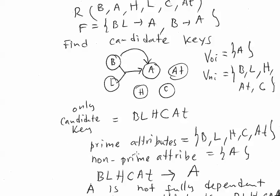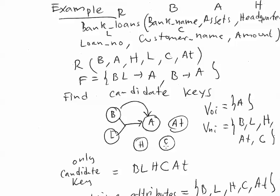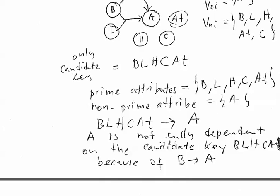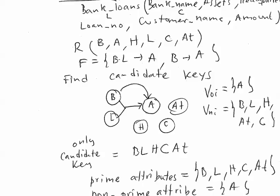There is also the concept of prime and non-prime attributes. Once we identify all candidate keys, prime attributes are those that are elements of any candidate key. So B by itself is a prime attribute — it is an element of the candidate key BLHCAT. The ones that are not part of any candidate key are called non-prime. We identify these as the first step to find the current normal form.